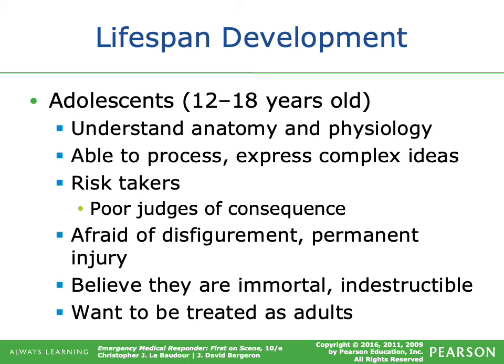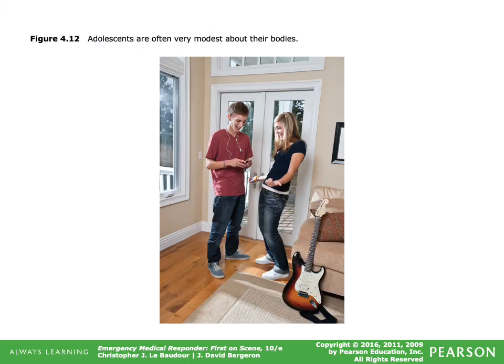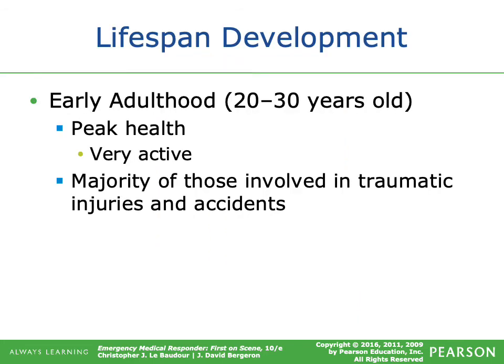Adolescents are often very modest about their bodies. Early adulthood (20 to 30 years old) represents a peak in health — individuals are generally very active, and many will be involved in traumatic injuries and accidents. They still tend to feel indestructible, especially males.